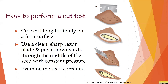To perform a cut test, you can cut longitudinally on a firm surface using a razor blade and push downwards to get a nice cross section to examine the contents of the seeds. There's also a more field-friendly technique utilizing masking tape and nail clippers — stick the seed to the tape and clip it so both sides don't fly away. Not all seeds will be cut tested, as some are very small, and that's when you'll utilize more of those visual assessments.